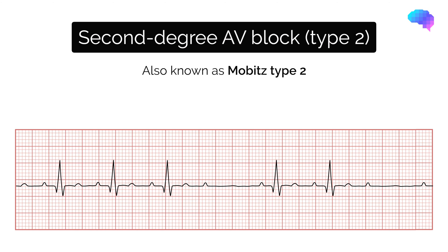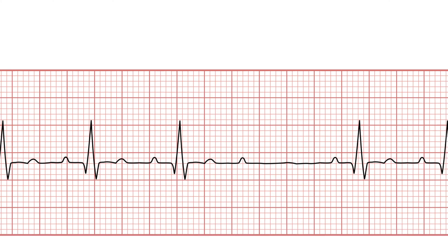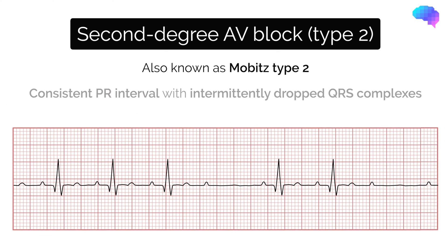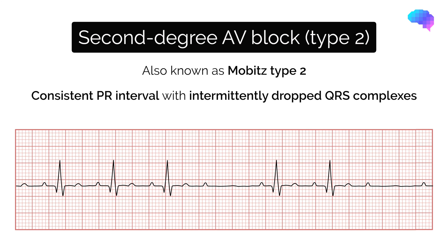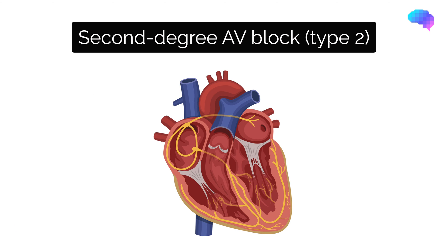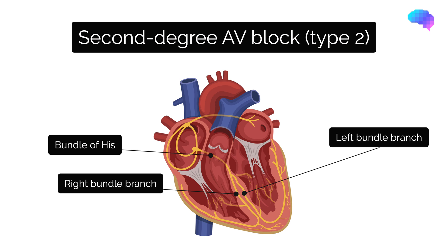Typical ECG findings in Mobitz type 2 AV block include a consistent PR interval duration with intermittently dropped QRS complexes due to a failure of conduction. The intermittent dropping of QRS complexes typically follows a repeating cycle — after every third P wave in a 3-to-1 block, or after every fourth P wave in a 4-to-1 block. Mobitz type 2 AV block is always pathological, with the block typically occurring at either the bundle of His in 20% of cases, or the bundle branches in 80% of cases.